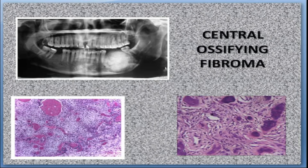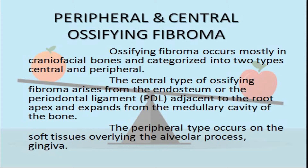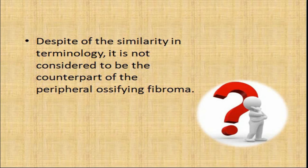Craniofacial bones are the common site for ossifying fibromas. It is of two types: central and peripheral. Peripheral ossifying fibroma, discussed in an earlier video, is commonly seen on the gingiva and comprises 9% of total gingival growths. Central ossifying fibroma may arise from the endosteum or periodontal ligament adjacent to root apices and expands from the medullary cavity of bone. Despite similarity in terminologies, it is not considered the counterpart of peripheral ossifying fibroma, because peripheral ossifying fibroma is a non-neoplastic, reactive hyperplastic inflammatory lesion, while central ossifying fibroma is a true neoplasm of bone.